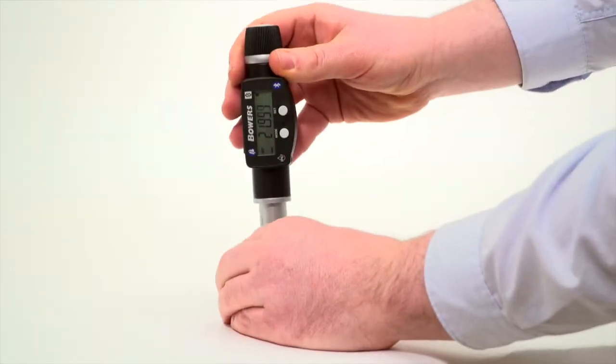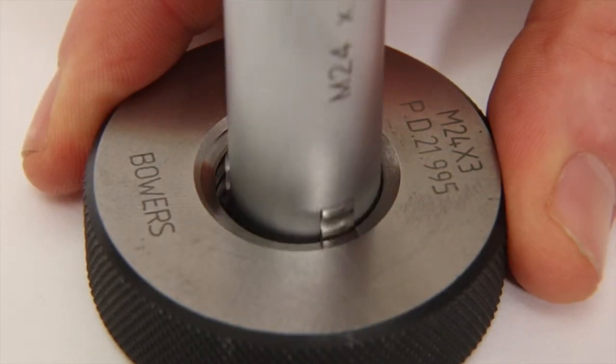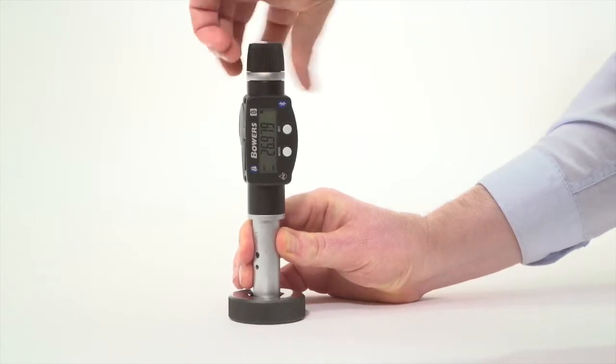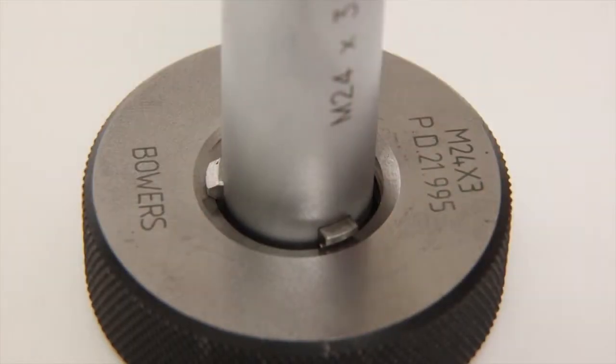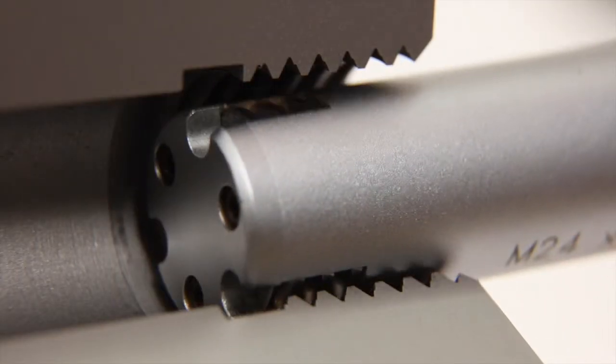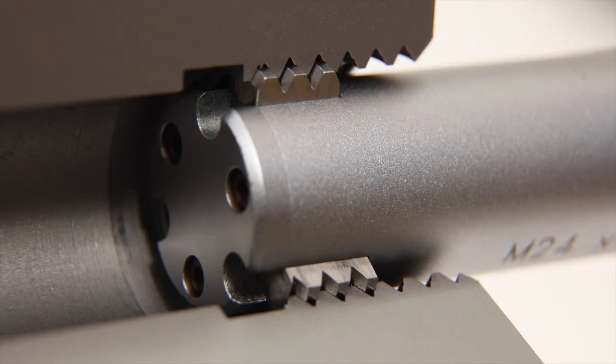Gauges are calibrated in the supplied setting ring, referencing the display to the actual pitch diameter as marked on the ring. The part can then be measured. The head enters the bore and then takes an actual reading of the effective pitch diameter, contacting on the flank area of the threads.